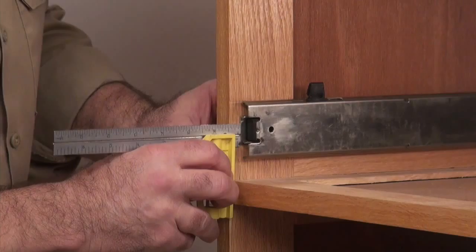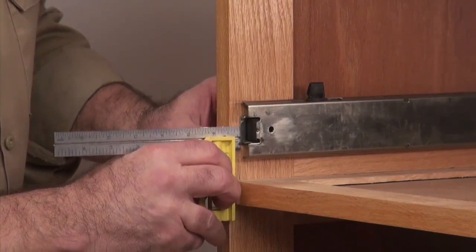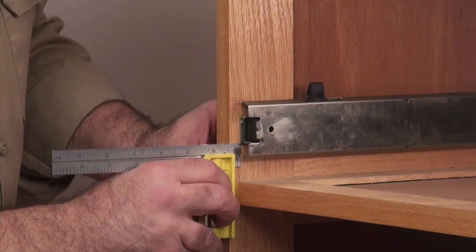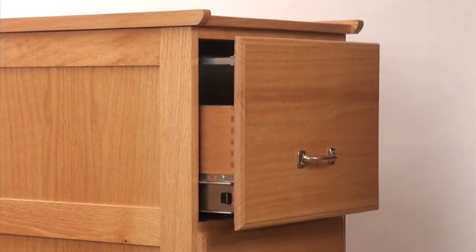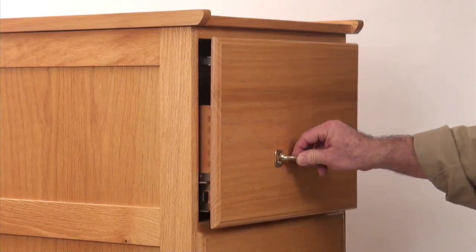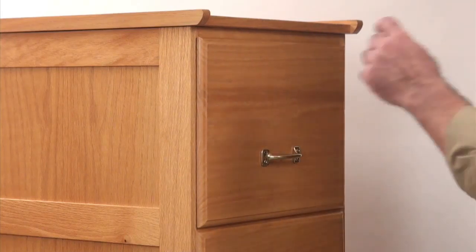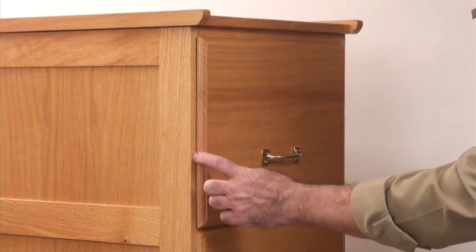You'll notice that the cabinet member of a slide usually doesn't go all the way to the front plane of the cabinet. This distance is called the setback. The setback dimension helps establish a small space between the drawer front and the cabinet carcass. This is called the drawer gap.